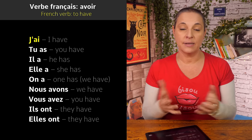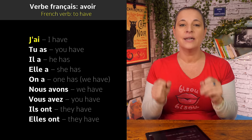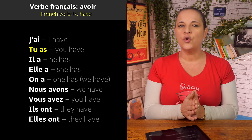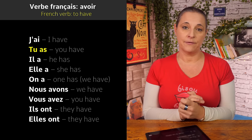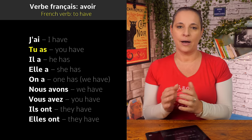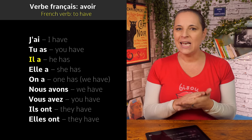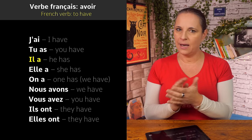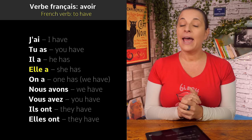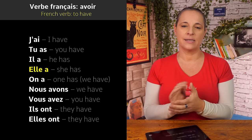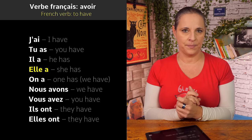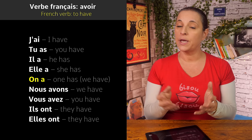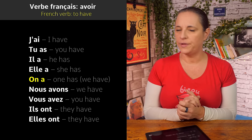J'ai — and that means I have. Répétez: j'ai. Tu as — you have. Tu as. Il a — he has. Il a. Elle a — she has. Elle a. On a — one has, or we have. On a.